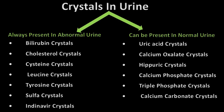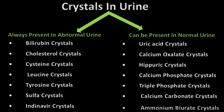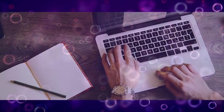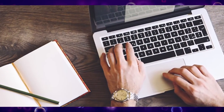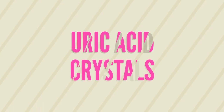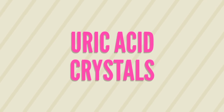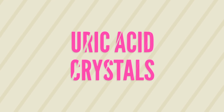Crystals that can be present in normal urine include uric acid crystals, calcium oxalate crystals, hippuric acid crystals, calcium phosphate crystals, triple phosphate crystals, calcium carbonate crystals, and ammonium biurate crystals. Now we are going to study these crystals one by one.